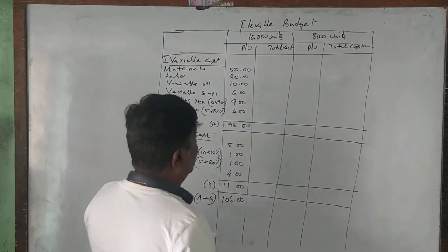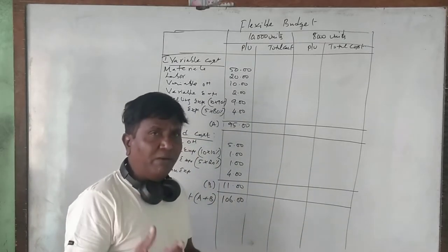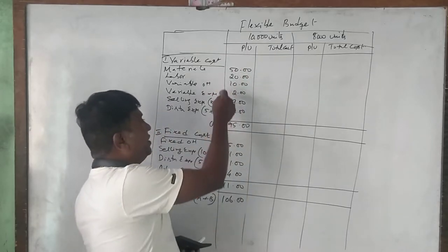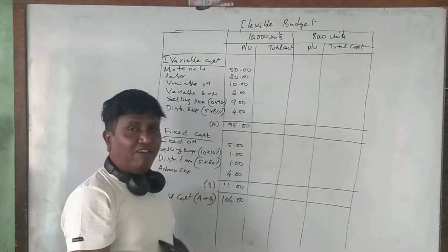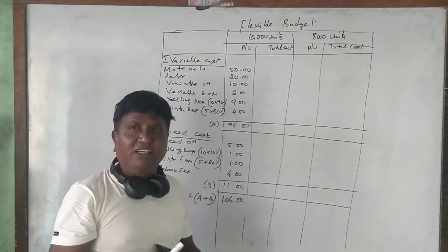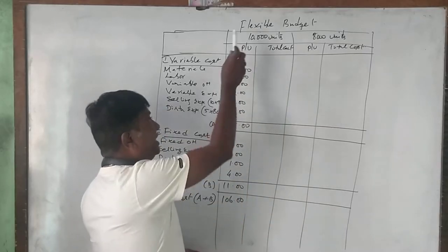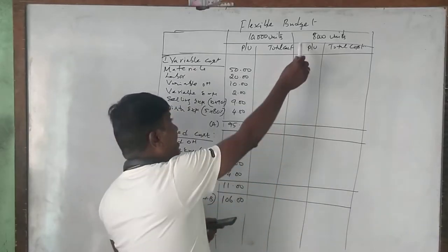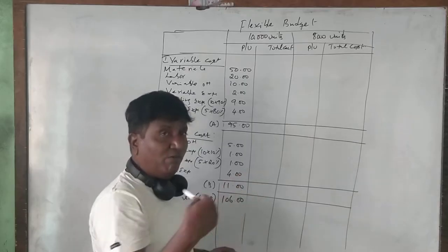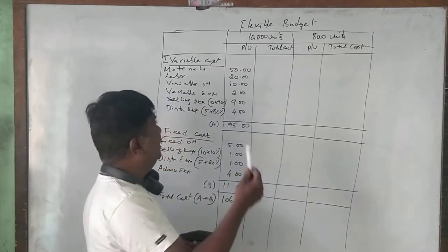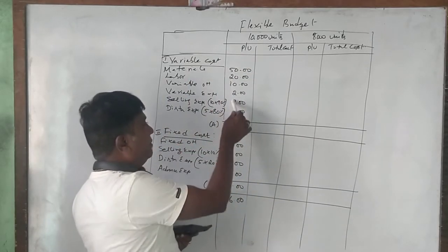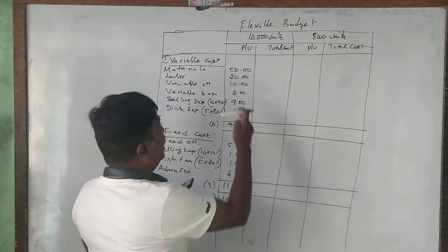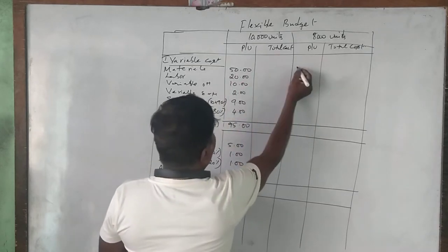Now for the 10,000 units column: the variable cost per unit is the same at 95 rupees. Whether you manufacture 10,000 units or 8,000 units, the variable cost per unit remains the same — 50 rupees for material.